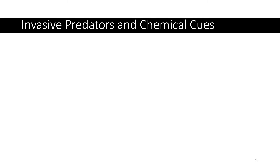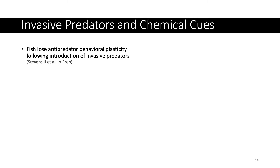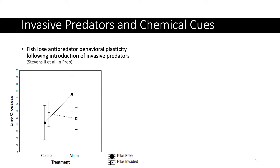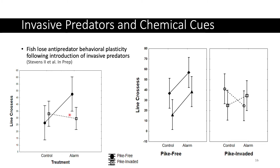Now we'll talk about an example of invasive predators and chemical cues from my dissertation, where I found that fish lose their anti-predator behavioral plasticity following the introduction of an invasive predator. I asked if three-spine stickleback populations from pike-free and pike-invaded habitats differ in how they behaviorally respond to alarm cues. Pike-free populations shown with closed circles display a behavioral response to alarm cue, while pike-invaded populations don't. That behavioral response has been lost via genetic assimilation. The results are somewhat repeatable — pike-free populations both show the same behavioral response, whereas pike-invaded populations show either a very weak increase or a decrease in activity, which was statistically not significant.